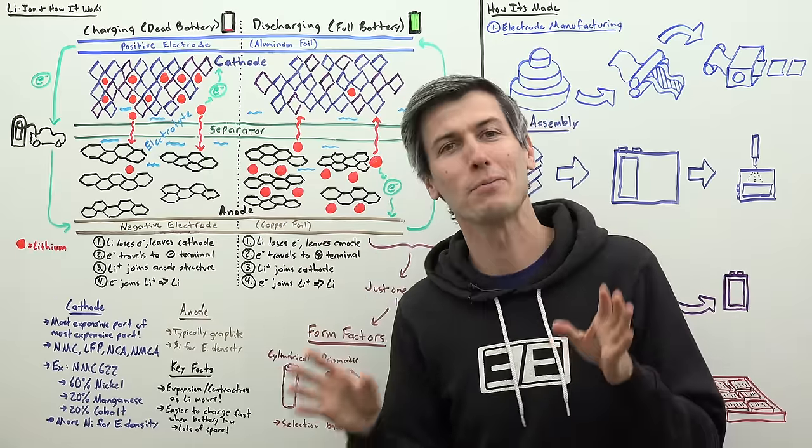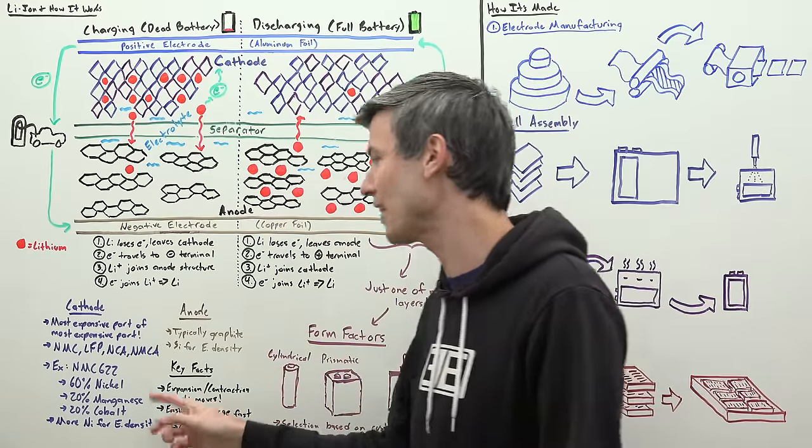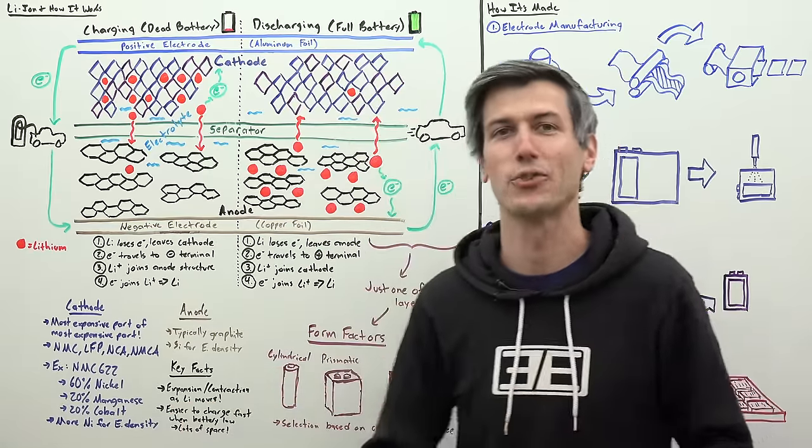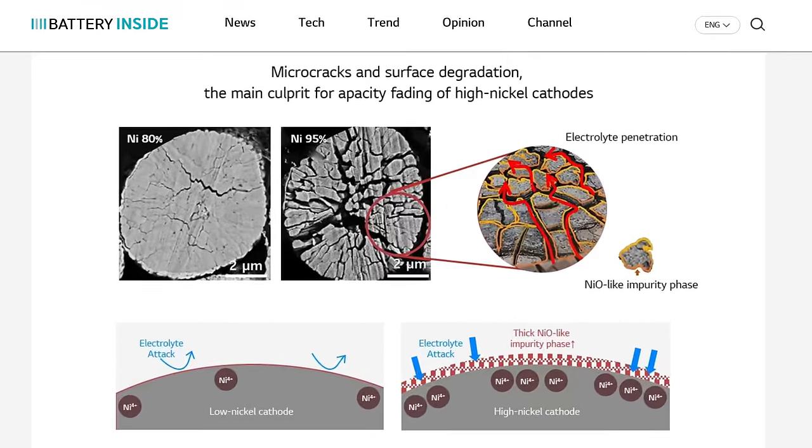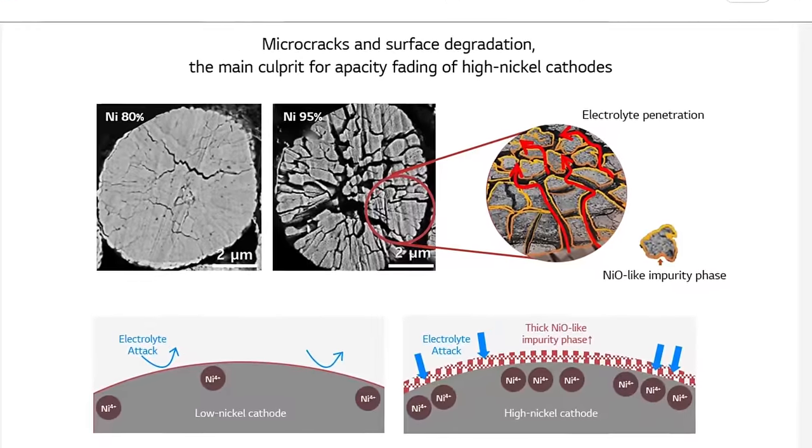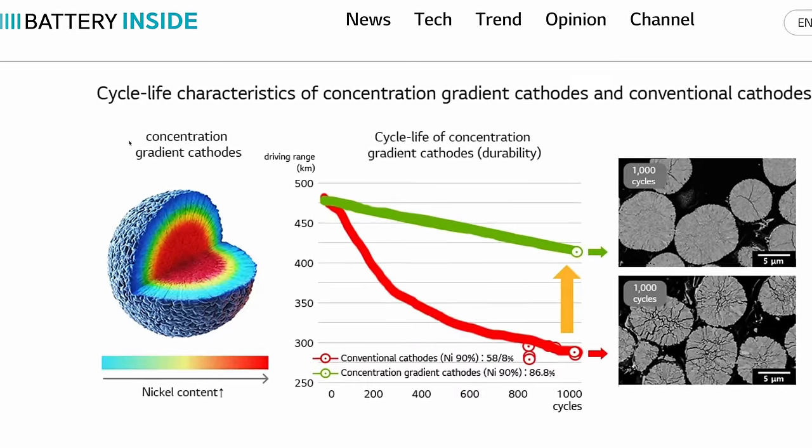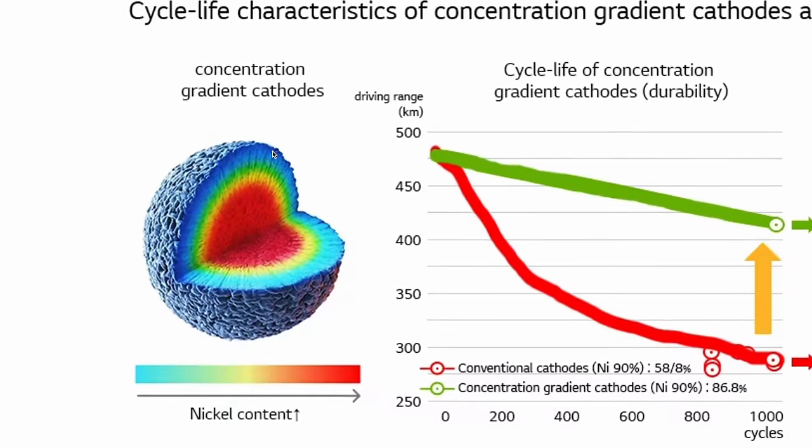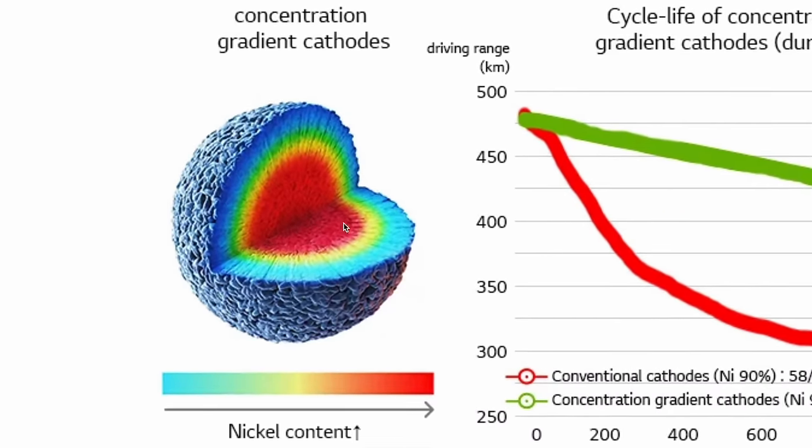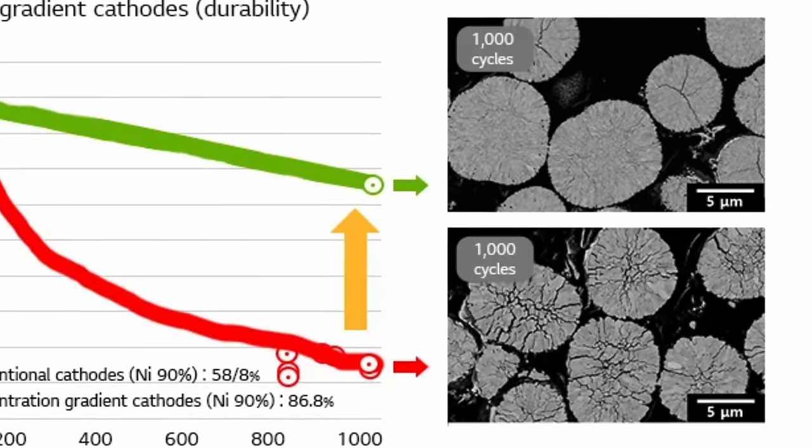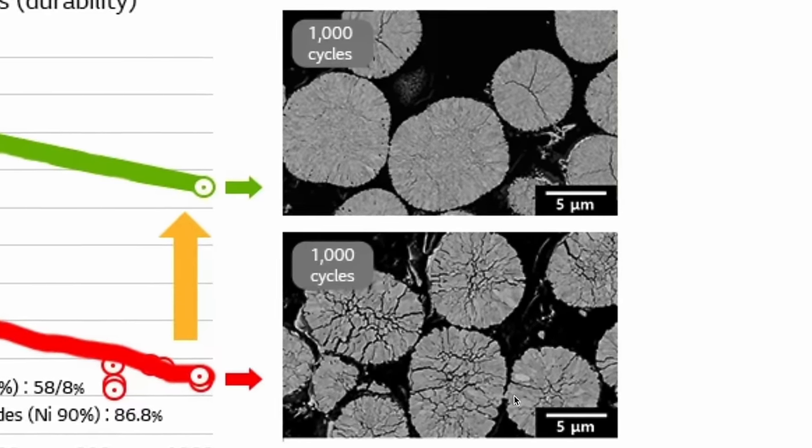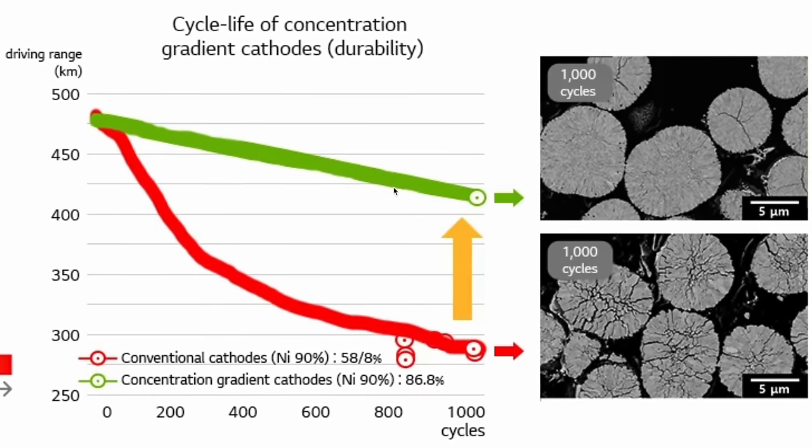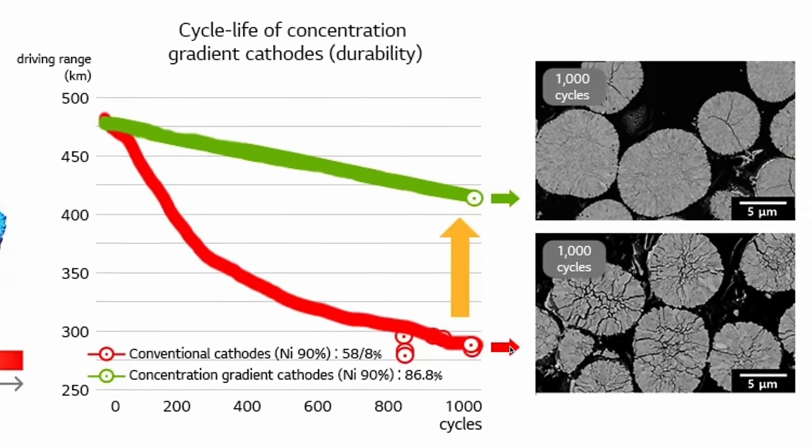Increasing the nickel content of the cathode is actually a really interesting discussion. Using higher percentages of nickel tends to cause micro-cracking of the cathode, as well as increasing reactivity with the electrolyte. But you can actually use higher concentrations of nickel by using a gradient in the cathode, with higher nickel concentration in the center and less at the exterior. This results in a particle that's less susceptible to micro-cracking and has less surface reactivity with the surrounding electrolyte, so you get improved energy density without the major drawbacks.